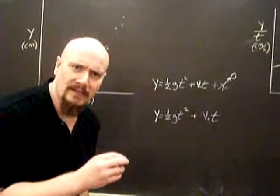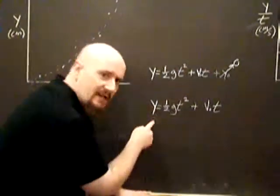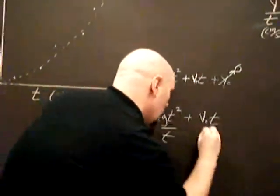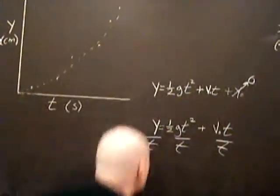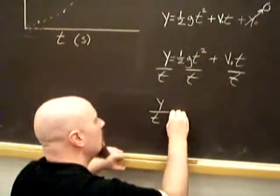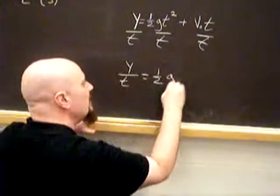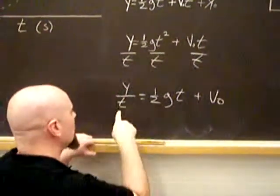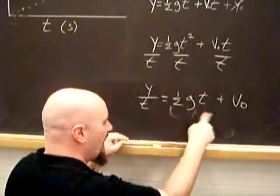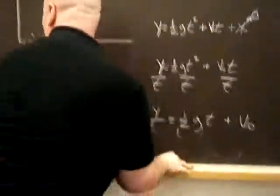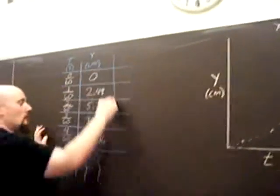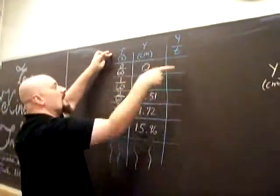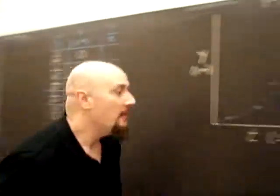All right, but we do want to linearize this. So, going back to this, we could linearize this by dividing everything by t. All right, so we'll get y over t will equal one-half gt plus v-naught. So, this will be our y equals mx plus b. So, we'll need another column. We'll need another column for y over t values. So, take the y and divide it by each t to get another column. And then we're almost there.